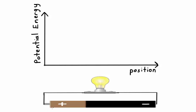In this video we're going to have a look at how energy is conserved in a circuit. In the diagram we have a long flat battery at the bottom, which is connected to a light bulb through wires.